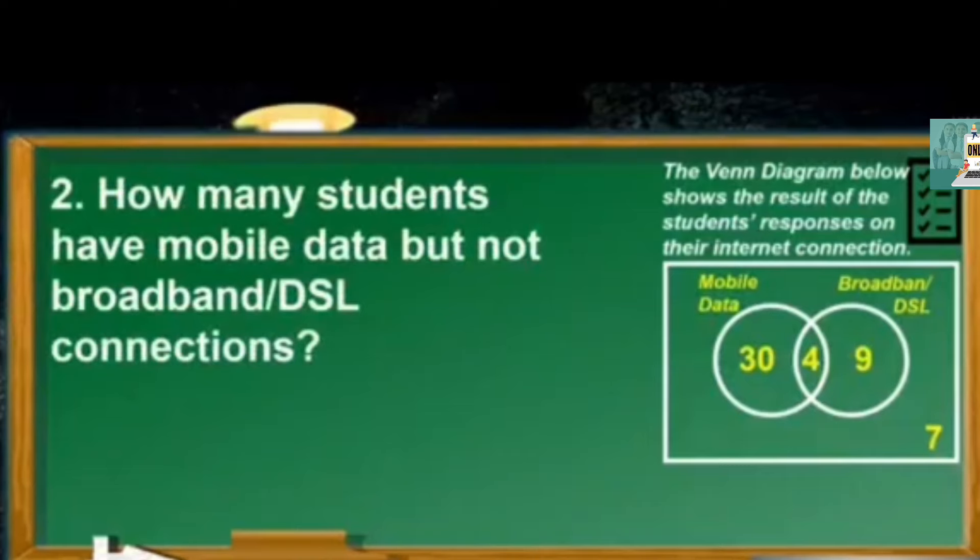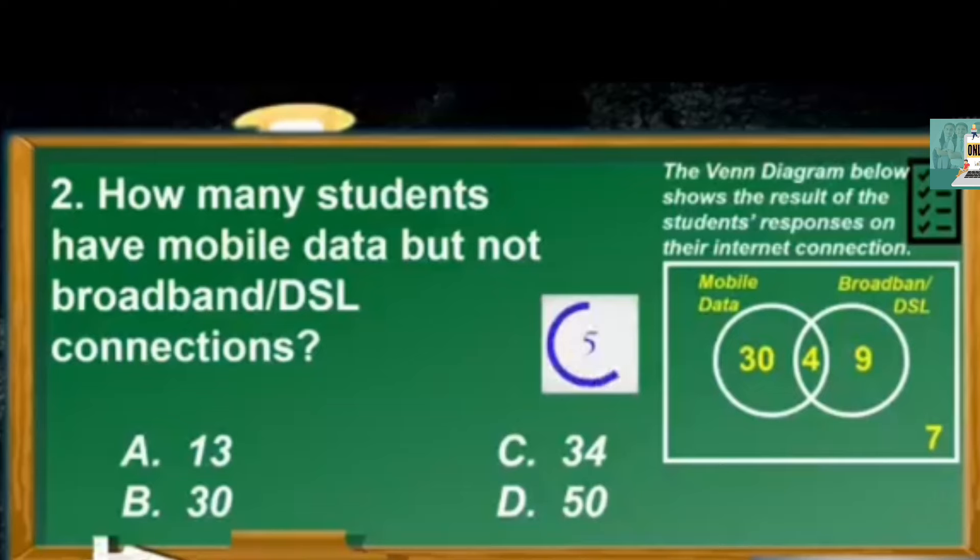Next, how many students have mobile data but not broadband or DSL connections? A13, B30, C34, D50. The correct answer is B30.